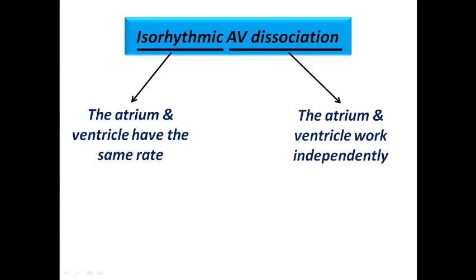Let's explain the name. 'Isorhythmic' means that the atrium and the ventricle have the same rate, so there is a one-to-one relationship where each P-wave is followed by a QRS complex. However, they are dissociated from each other because the atrium and the ventricle work independently. This explains why the P-R interval is variable — the P-waves sometimes come inside the complex or after it, meaning the atrial rhythm is completely independent from the ventricular rhythm.